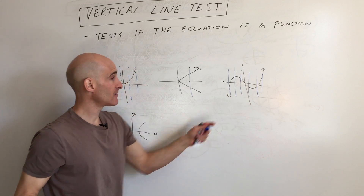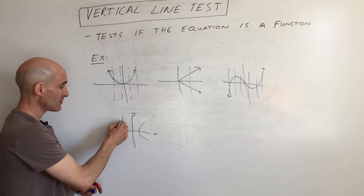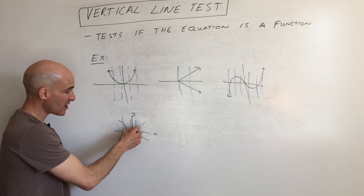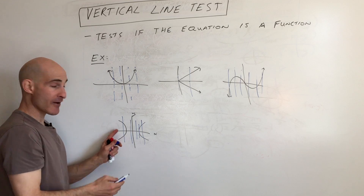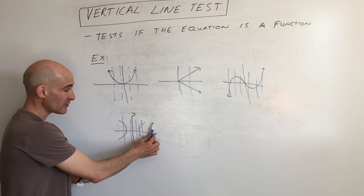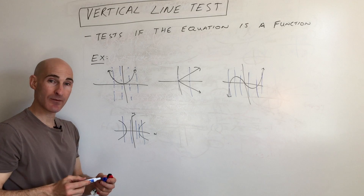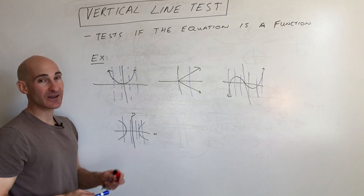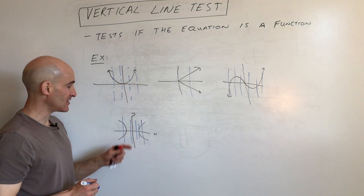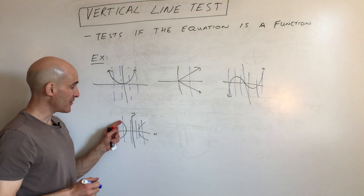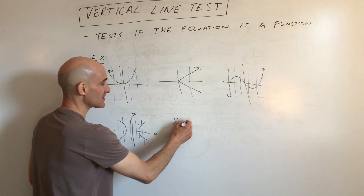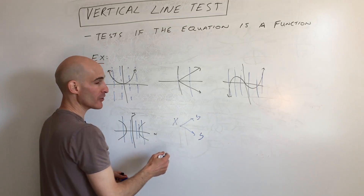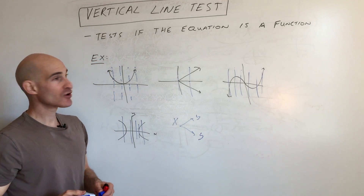And then this one over here, you can see right away it's crossing at more than one point. Here it doesn't even cross the graph at all, and here it's just crossing at one point. But if it ever, at any point as you scan from left to right, crosses the graph at more than one point, that means y is not a function of x — meaning for each x input there is more than one y output.